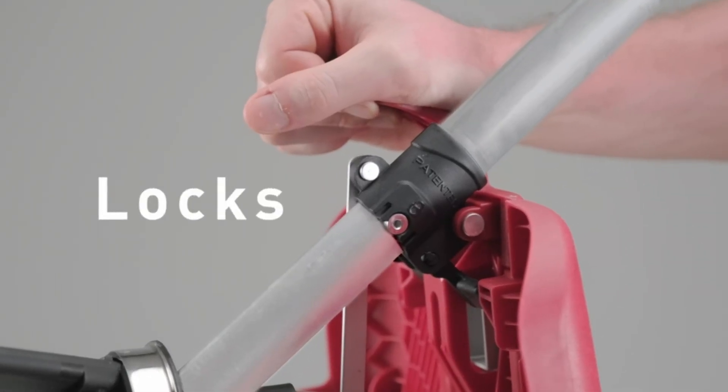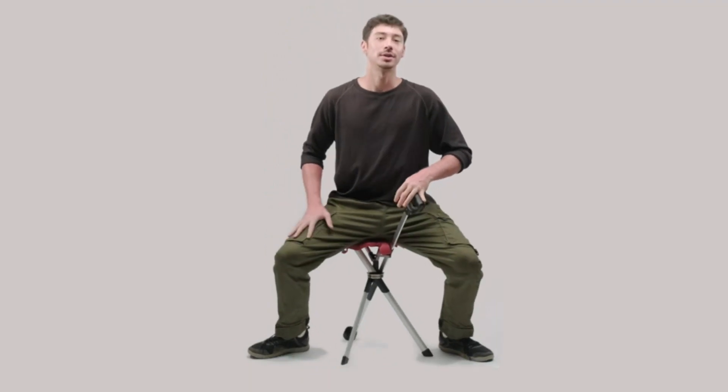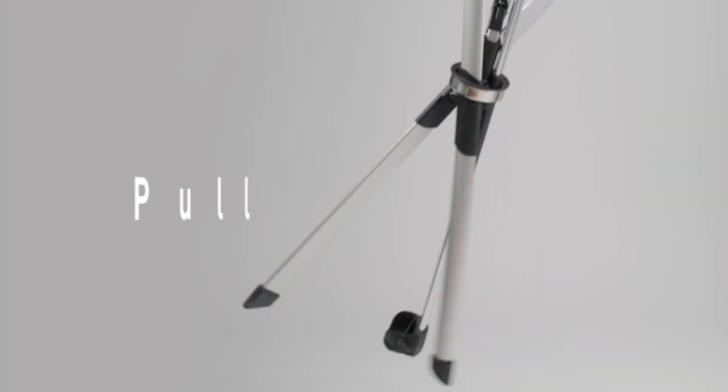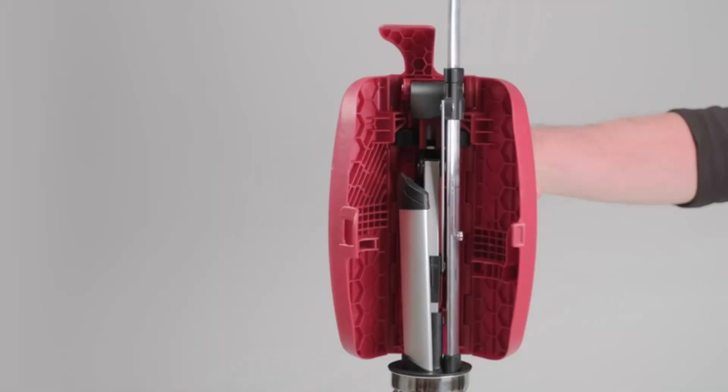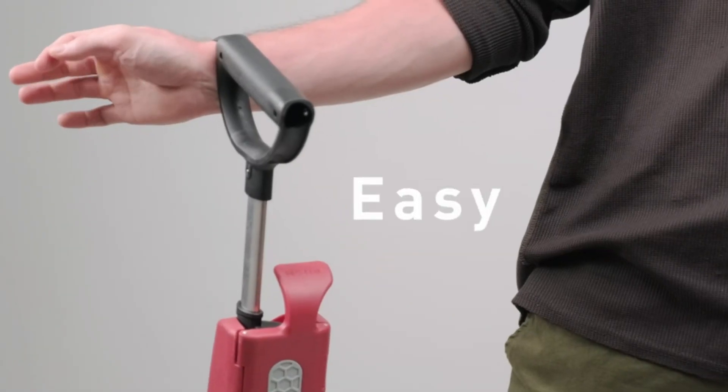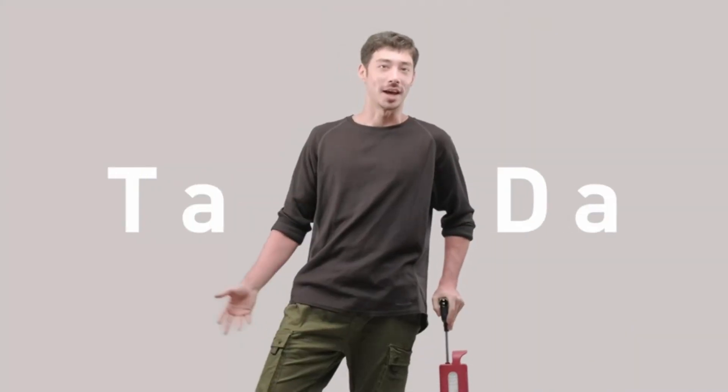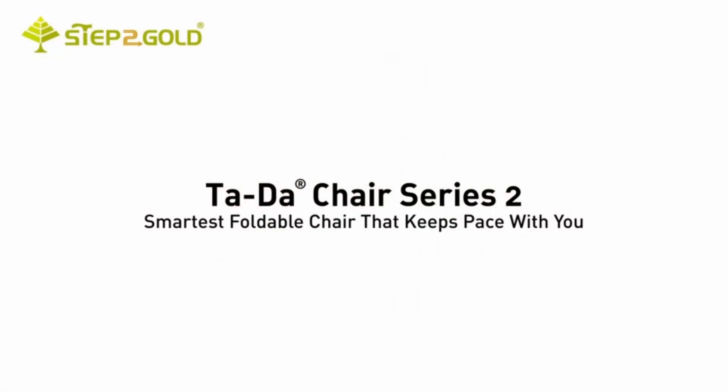When you need a break, it converts to a foldable walking stick with a comfortable seat. Take a minute to relax. Made of lightweight aluminum, easy to carry, and will not weigh you down during your trip. The Step to Gold Tata Series to Chair features an anti-slip design, ensuring you have a firm grip and seat even on uneven ground. Whether you're conquering rugged terrain or simply looking for a quiet place to rest, the Step to Gold Tata Series to Chair has you covered.